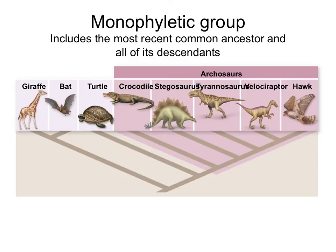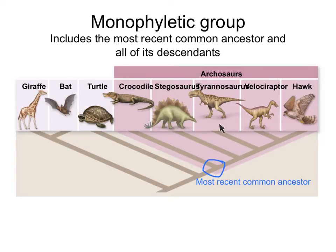A monophyletic group includes the most recent common ancestor — let's say the archosaurs — and the most recent common ancestor is this one here. All the descendants from that common ancestor are included in the group, so the shaded groups include all the branches that derive from that common ancestor. Since everyone who derived from that ancestor is included, this is a monophyletic group.